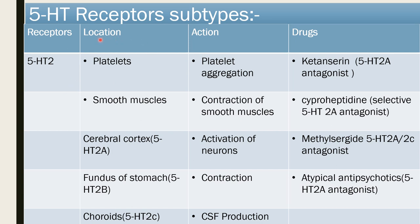5-HT2 receptors — location: platelet, smooth muscle, cerebral cortex, fundus of stomach, and choroid plexus. Action on platelet: platelet aggregation; drug is ketanserin, a 5-HT2A antagonist which inhibits platelet aggregation. Ketanserin is a potent antihypertensive drug and also acts on alpha-1 receptors. On smooth muscle: contraction — drug cyproheptadine is a selective 5-HT2A antagonist that inhibits muscle contraction. On cerebral cortex: activation of neurons — methysergide is a 5-HT2A and 2C antagonist. On fundus of stomach: contraction — atypical antipsychotics act as 5-HT2A antagonists. On choroid plexus: action is CSF production.